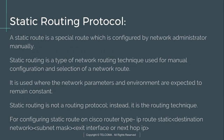A static routing protocol is used to route packets via a statically configured route. Static routing is a type of network routing technique used for manual configuration and selection of a network route. It is used where network parameters and environments are expected to remain constant, meaning IP addresses of the source, destination, or routers remain constant in the network. Static route is not a routing protocol; instead, it is a routing technique for configuring static routes.